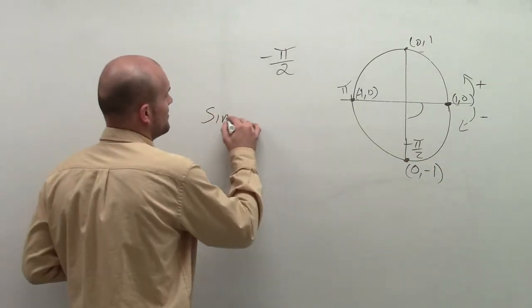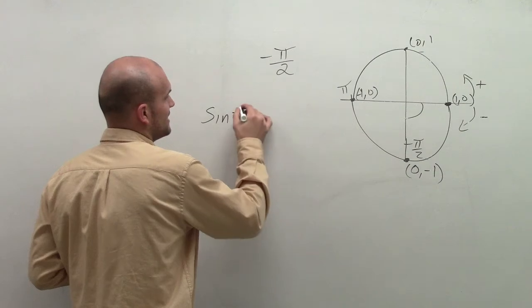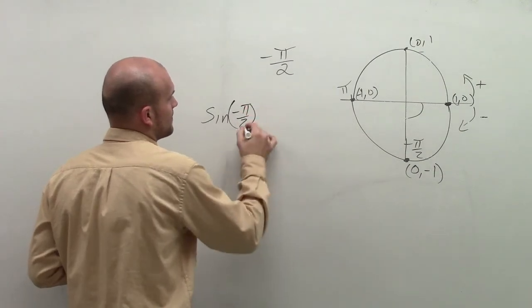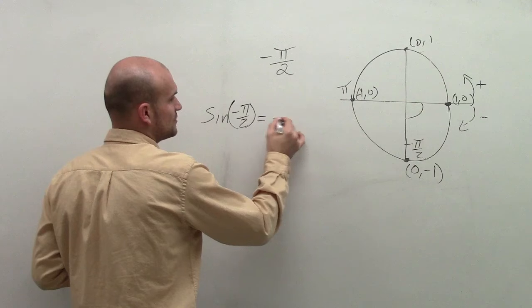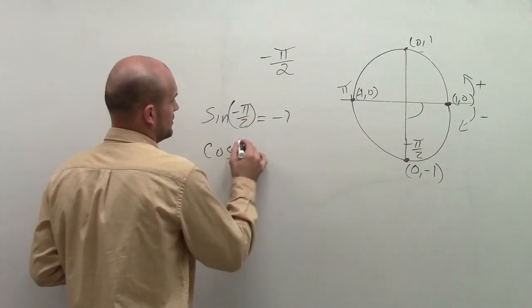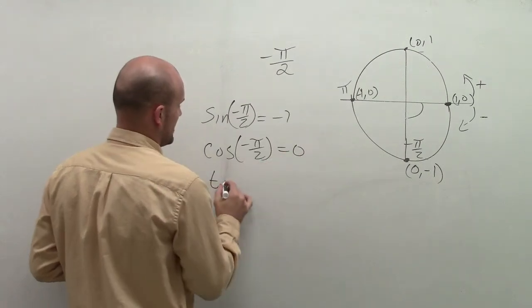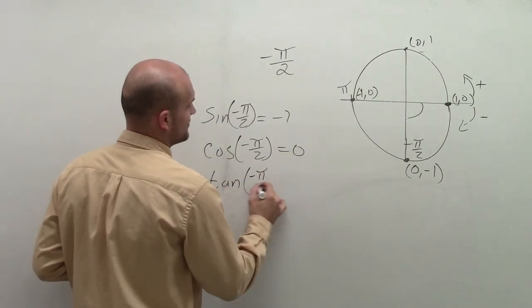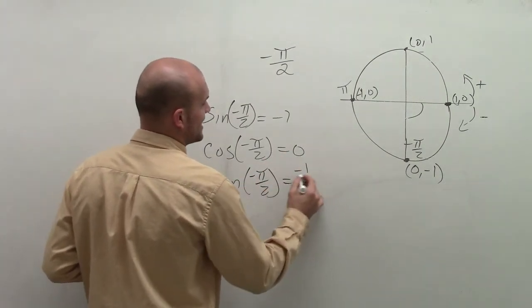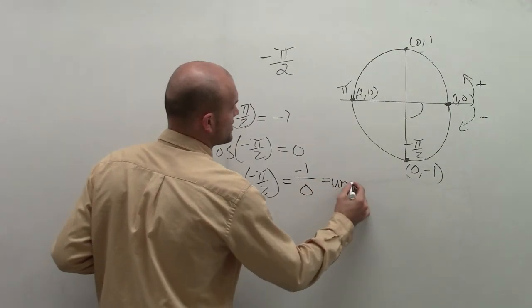So therefore, from this problem, I have sine of negative pi halves is going to be evaluated for my y coordinate, which is equal to negative 1. The cosine of negative pi halves is going to be 0. And the tangent of negative pi halves is going to equal negative 1 over 0, which is undefined.